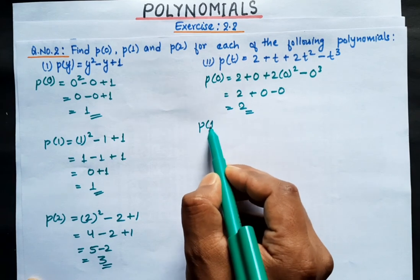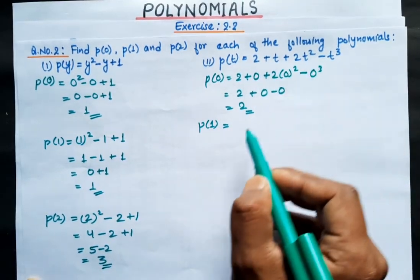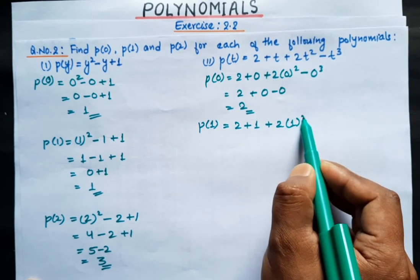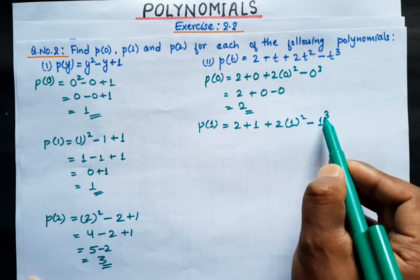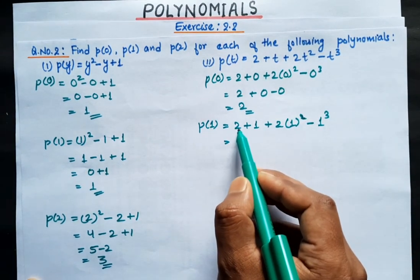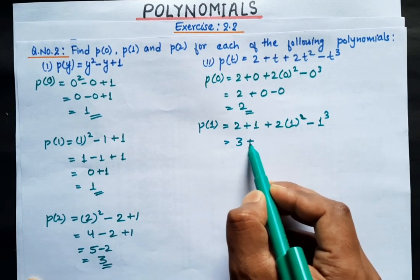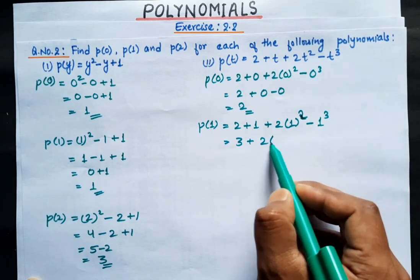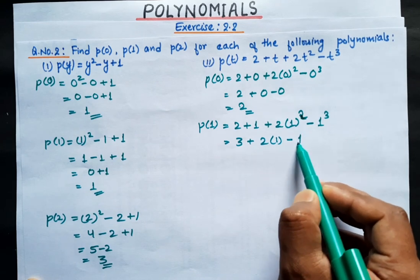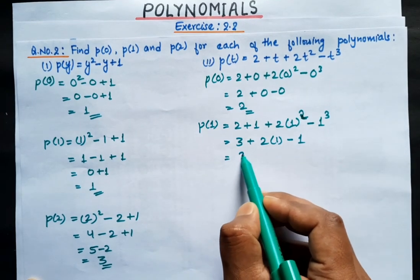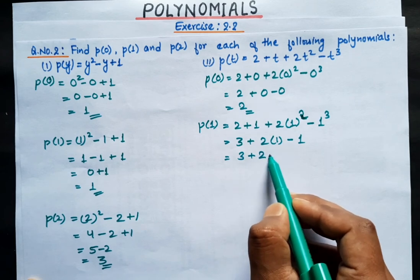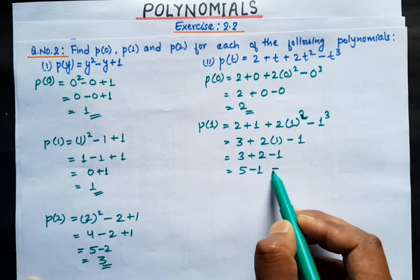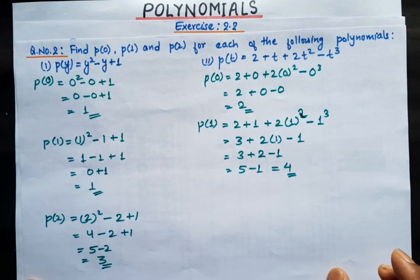Now finding P1: put t = 1, so we get 2 + 1 + 2(1²) - 1³. That is 2 + 1 = 3, plus 2 times 1 squared which is 2, minus 1 cubed which is 1. So 3 + 2 - 1 equals 4. P1 = 4.